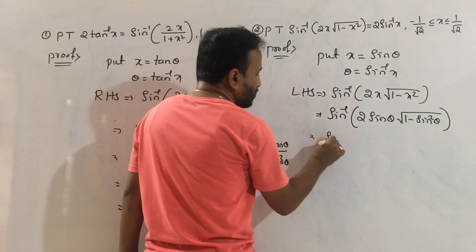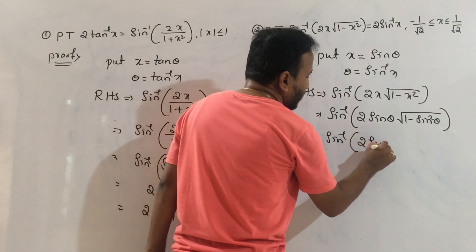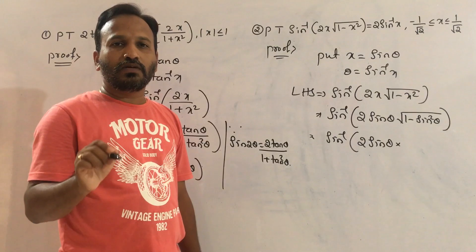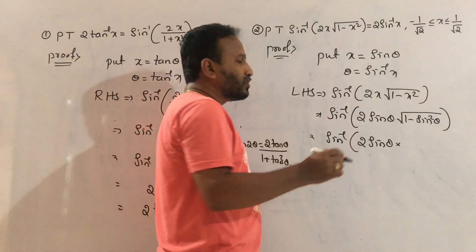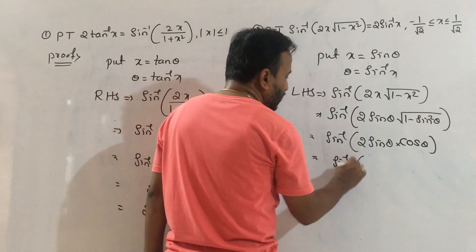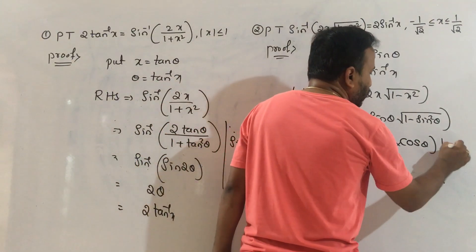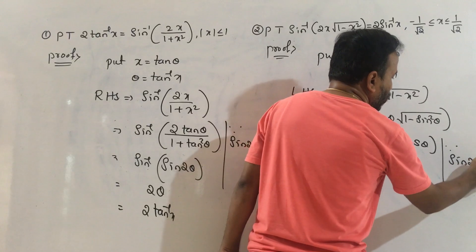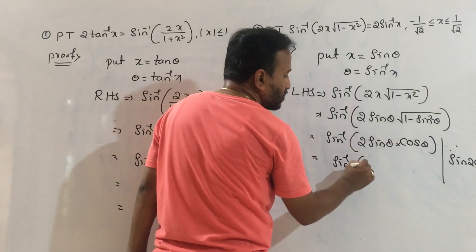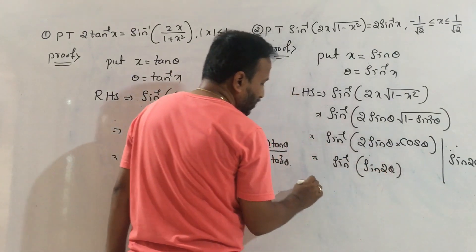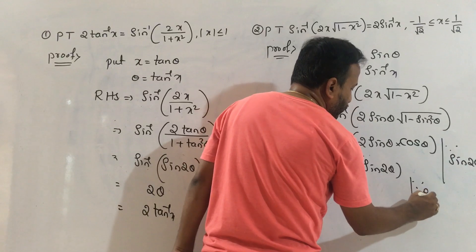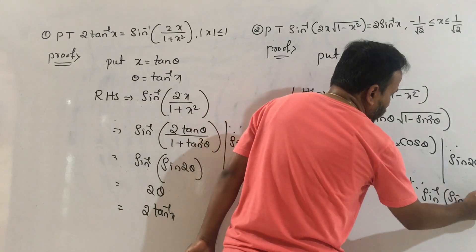So here, sin inverse of 2 sin theta into root of 1 minus sin squared theta means cos theta. Root of cos squared theta means cos theta. So we get sin inverse of 2 sin theta into cos theta, which equals sin 2 theta by the formula sin 2 theta equal to 2 sin theta into cos theta. Therefore, sin inverse of sin 2 theta equals 2 theta.